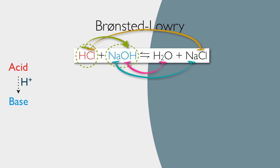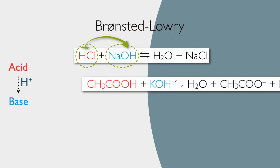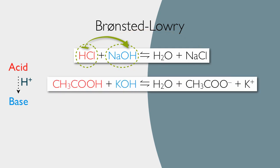The definition here of acid and base is in the green arrow — the proton moving from hydrochloric acid to sodium hydroxide. Here's another example with ethenoic acid and potassium hydroxide. Ethenoic acid has the extra proton. Potassium hydroxide will catch a proton. There's our proton that's going to move.